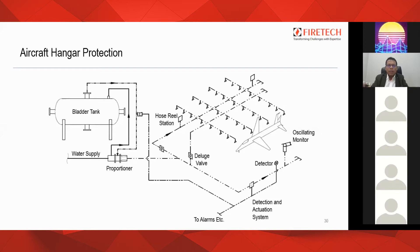Whenever a foam system is provided for an aircraft hangar, it can be either overhead sprinklers with a low expansion foam system — that is option one — or the second option is a high expansion foam system.